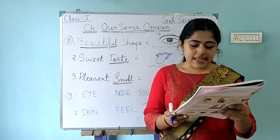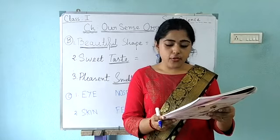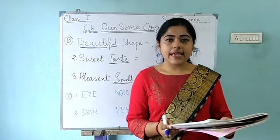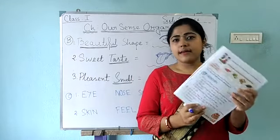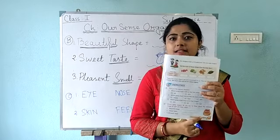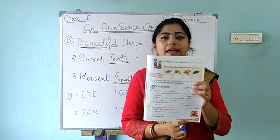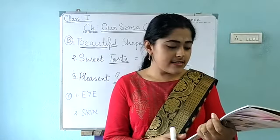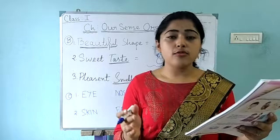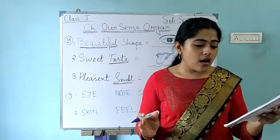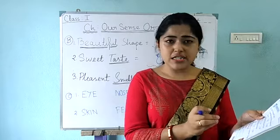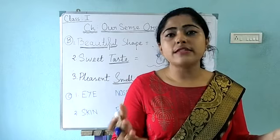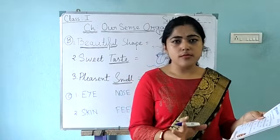There is a question: which sense organs do you use to know about the following things of your birthday cake? In the book there is a picture of a cake — it looks like a birthday cake. You have to write which sense organs are used. These questions are already given, and you have to write which sense organs you use for each one.